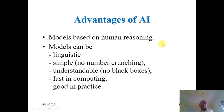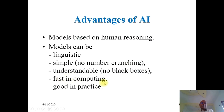What are the different advantages of artificial intelligence? These models are based on human reasoning and can be linguistic. They are simple models with no number crunching involved. The model is understandable and comprehensible — there are no black boxes. The model is fast in computing, with optimal space and time complexity. And the model can be good in practice — that is, it is a pragmatic model.